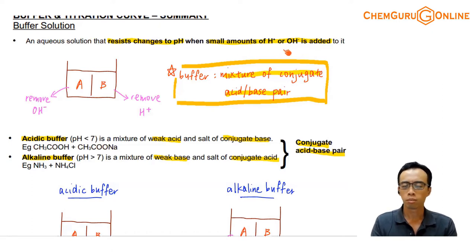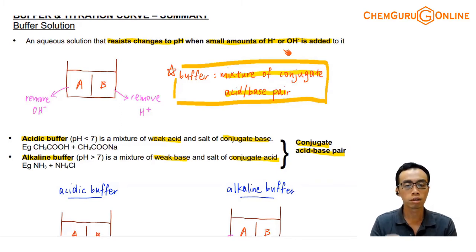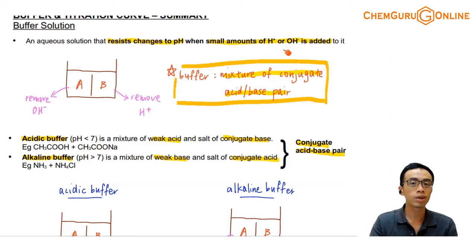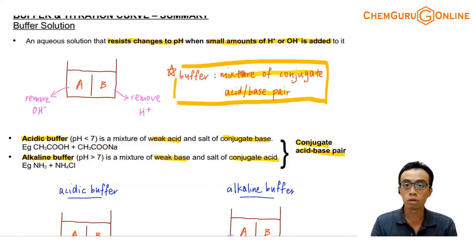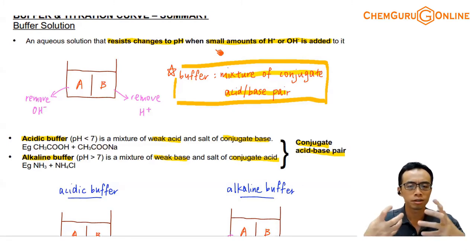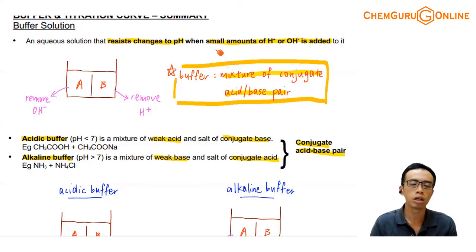Personally, I don't really like this definition, because it tells me what the buffer does — it tells me the function of the buffer — but it doesn't tell me what is inside this buffer. It doesn't tell me the ingredients of the buffer, what makes up this buffer. So we have to dig in a bit deeper, because we need to understand what is going on inside this buffer solution that makes it resist changes to pH.